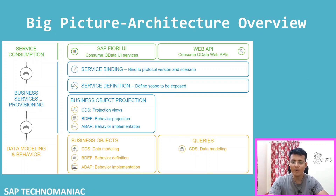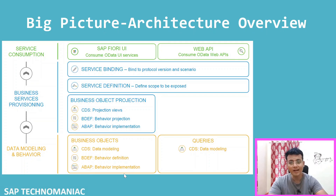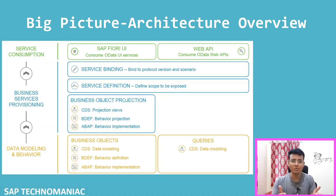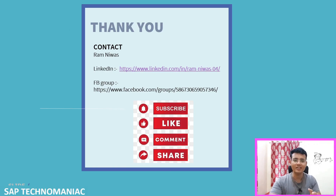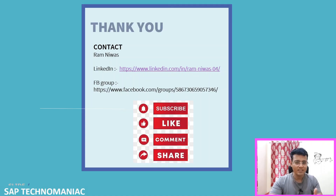To summarize, we have covered the business object's data model and behavior as part of the first layer. We already know CDS from previous videos; today we discussed the Behavior Definition Language and that implementation is done in ABAP classes. There are managed and unmanaged scenarios for queries and business objects, which we'll cover in upcoming videos. In my next video, we will discuss business service provisioning. Please like and share this video. Thank you and happy learning!